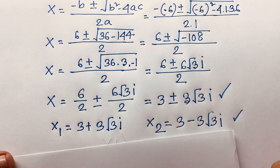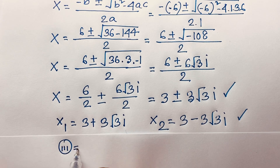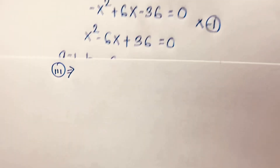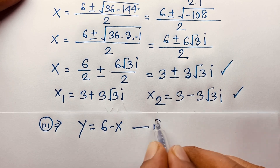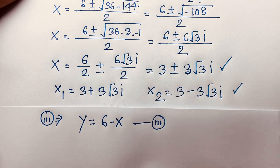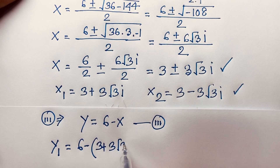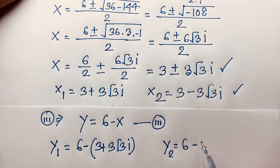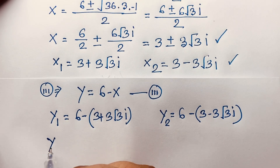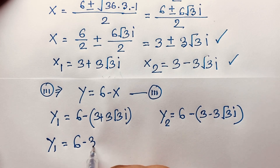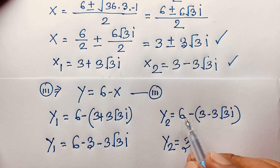Now we find the values of y using our third equation: y equals 6 minus x. When x₁ equals 3 plus 3√3 i, then y₁ equals 6 minus (3 plus 3√3 i), which gives y₁ equals 3 minus 3√3 i. When x₂ equals 3 minus 3√3 i, then y₂ equals 6 minus (3 minus 3√3 i), which gives y₂ equals 3 plus 3√3 i.